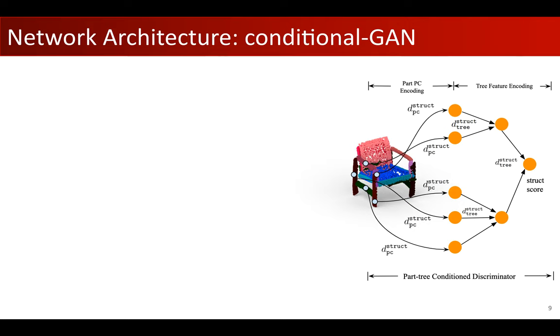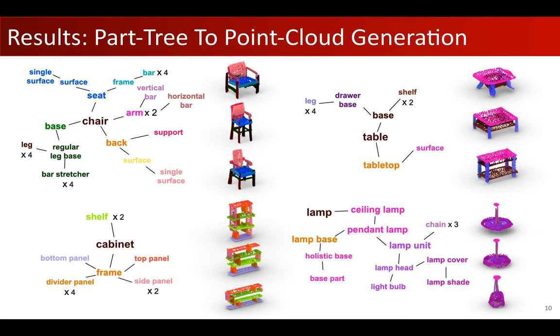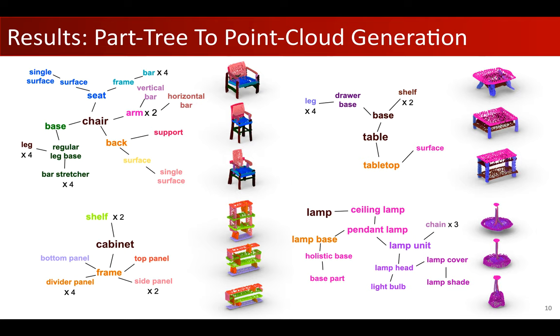Our approach demonstrates state of the art performance on four biggest categories in the PartNet dataset for the PT2PC task. We also show that our method learns disentangled representation of shape structure and geometry.